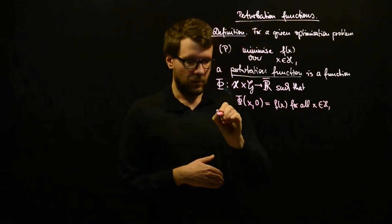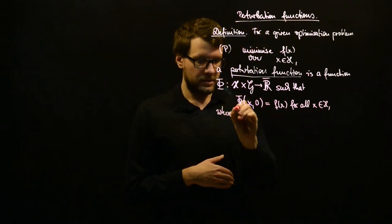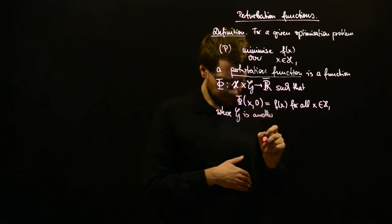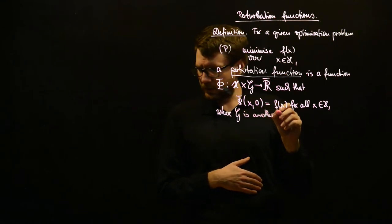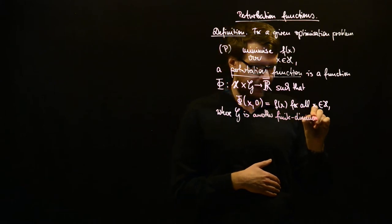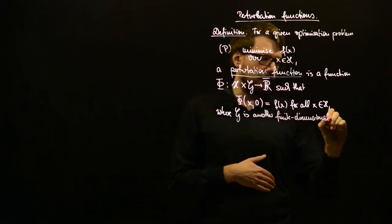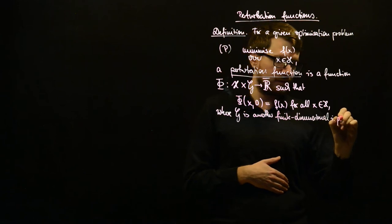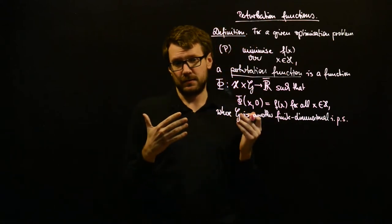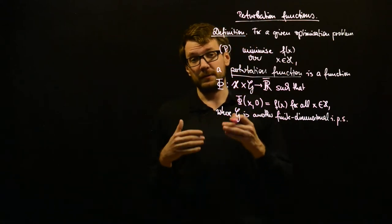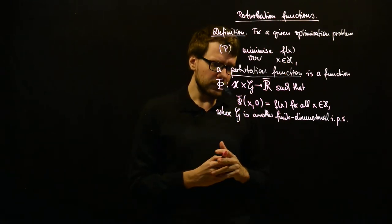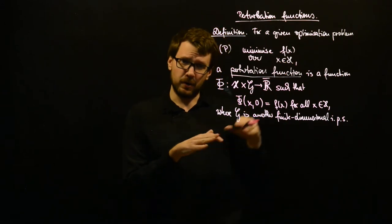And where G is another finite dimensional product space. So, G will be the space where the dual variables, or the variables for the dual problem, will live. And therefore, this G somehow determines, so if you have like a one-dimensional space for G, so only a one-dimensional perturbation of the problem, then the resulting dual problem will be one-dimensional.